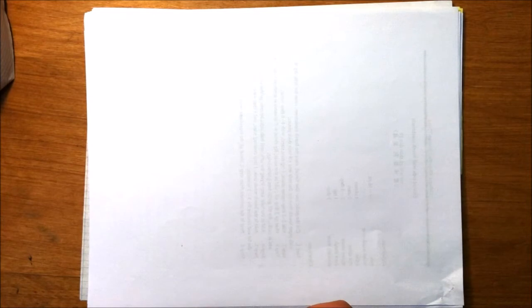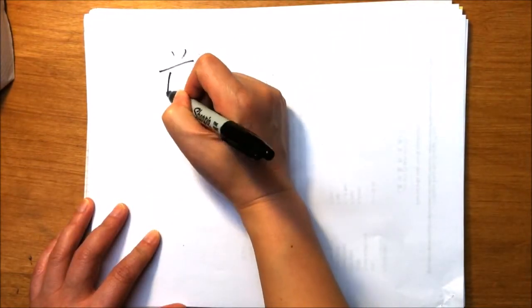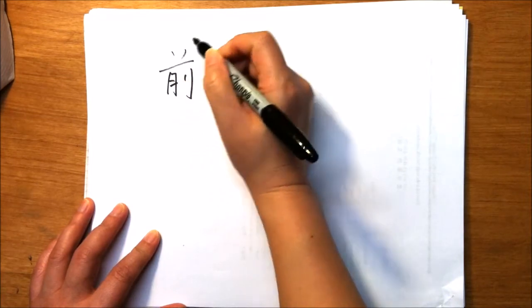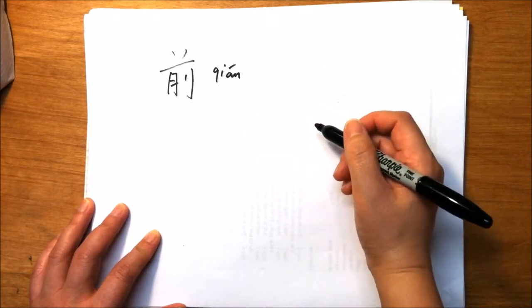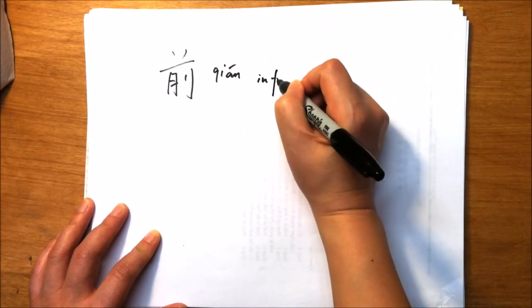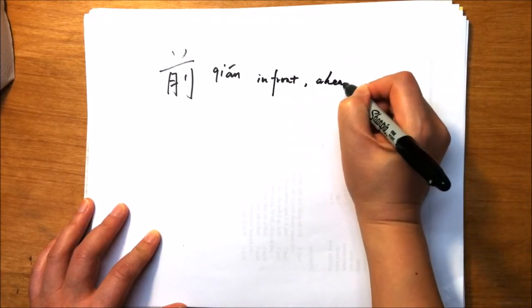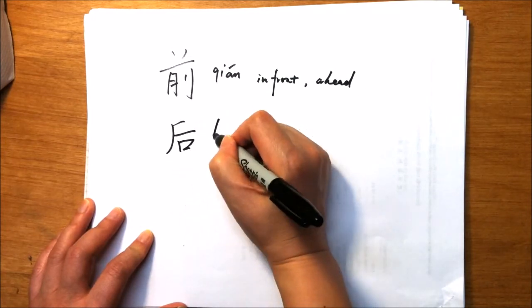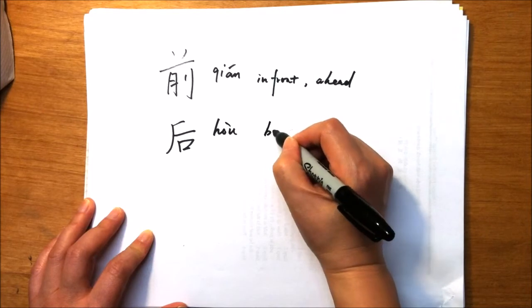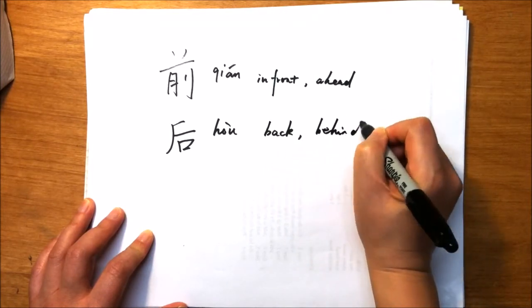前 means in front or ahead. 后 means back or behind.